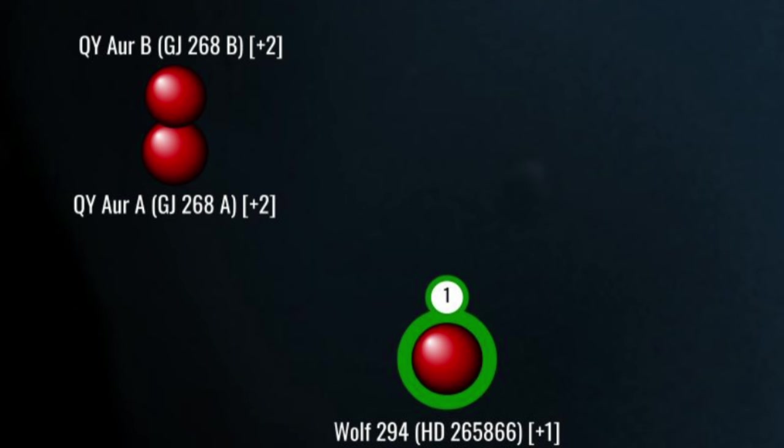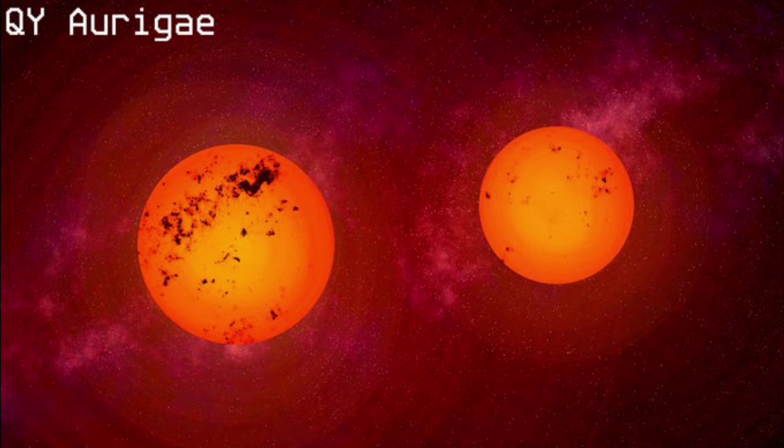Rimward and one parsec north, we arrive at QY Aurigai, a.k.a. Gliese 268, a binary of two small red dwarfs, each about a fifth the mass of the sun, orbiting each other in about ten days. This arrangement makes the system an RS Canem Vinatacorum variable. Gotta love those science terms. An RS variable is a binary system whose components orbit so closely that their magnetospheres interact, each generating star spots on the other's surface. Needless to say, it flares.